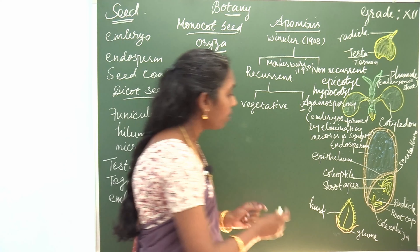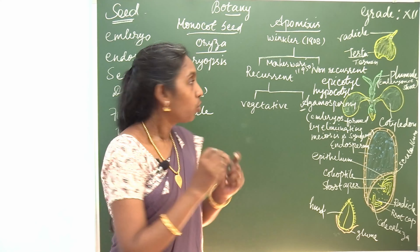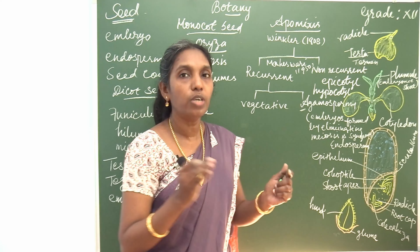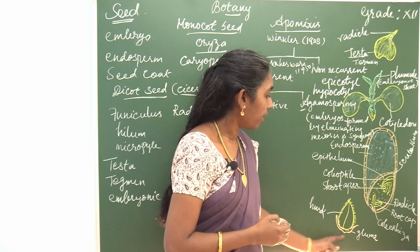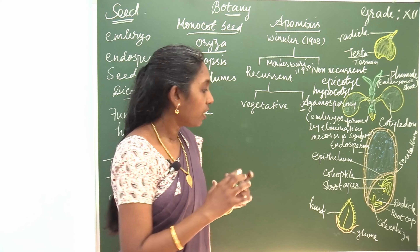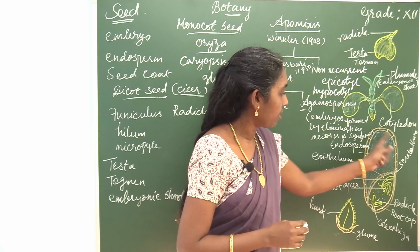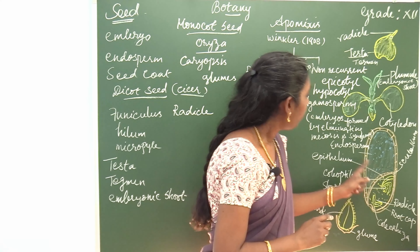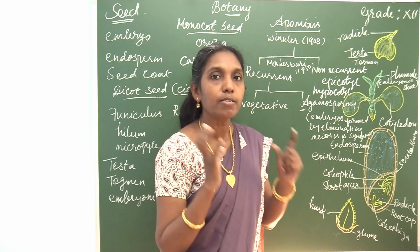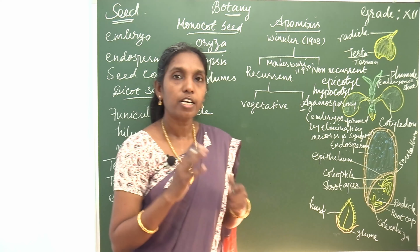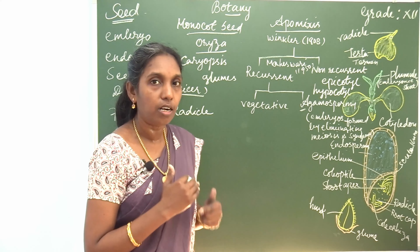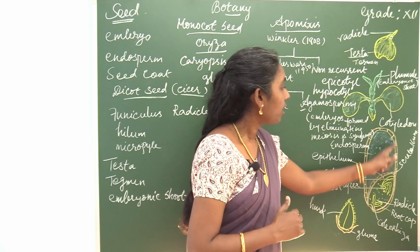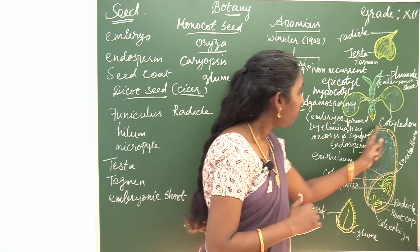The husk is joined by glumes, which are arranged in two different rows. Inner there is the seed. The bulk region of this seed is developed as endosperm. This seed is an example of an endospermous seed.